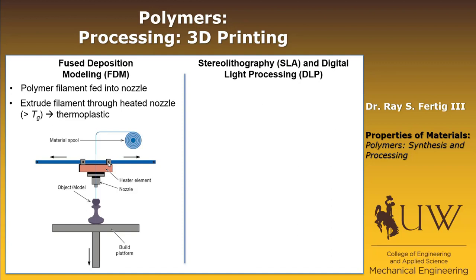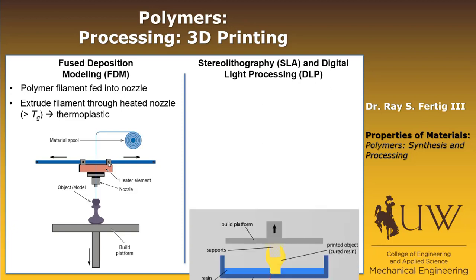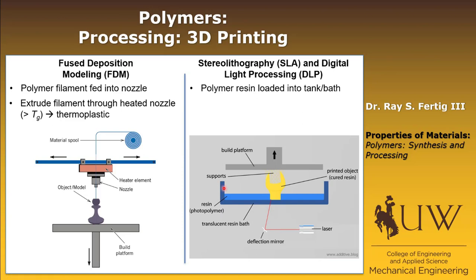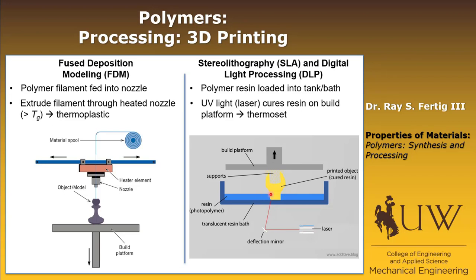Another technique is stereolithography, and I'm grouping it with digital light processing, or DLP, because they work under the same principle. In this case, we load a liquid polymer resin into a bath — unlike the solid polymer filament used in FDM. We pass UV light through the bottom of the tank. The build platform comes into the tank and the polymer is cured on it. As it moves up, we continue to cure successive layers. The resin used is typically a thermoset, cured by a UV-initiated reaction rather than heat.